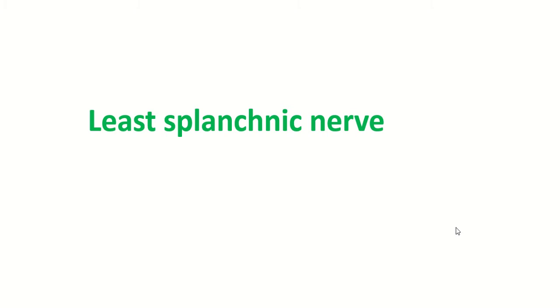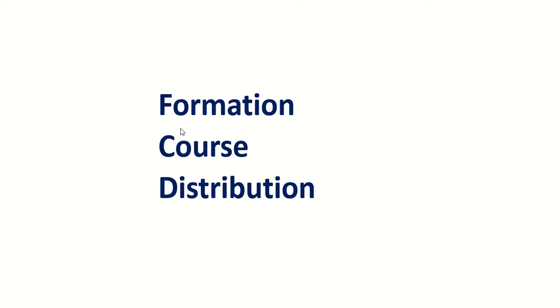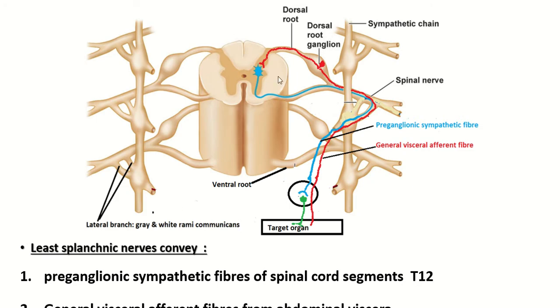Assalamu alaikum, welcome to the Easy Human Anatomy channel. In this video I discuss the least splanchnic nerve: its formation, course, and distribution. This topic covers two types of fiber. The first is the preganglionic sympathetic fiber, which arises from the thoracic T12 spinal cord segment, specifically from the lateral horn of the gray matter of the spinal cord.